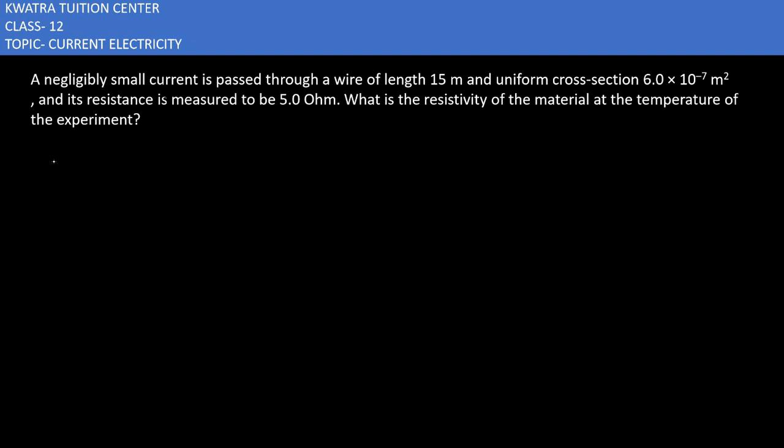Starting with the fourth part here, it says a negligibly small current is passed through a wire of length 15 meters. The length given is 15 meters. The second thing is uniform cross-section, which means the variable is constant.